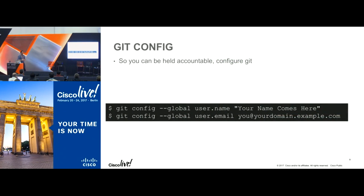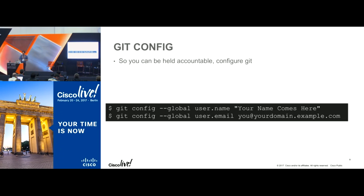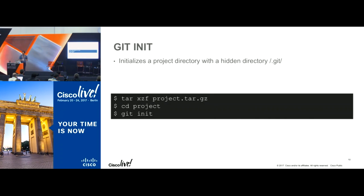In order to get started with Git, you have to do at least one thing: configure your client. To configure your client, we're going to do it on the command line, though there are clients out there that make this process easier. You run "git config --global" and then set the two properties: user.name and user.email. Once you've done that, you have a Git client that can start doing things.